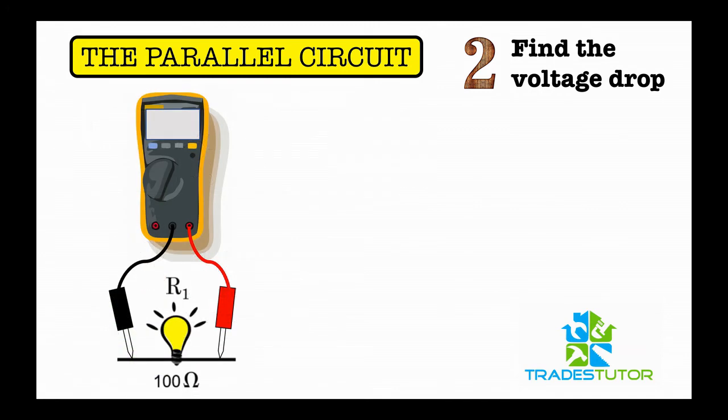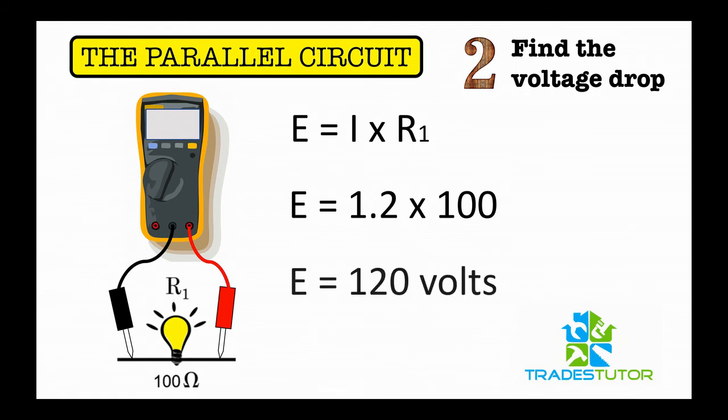All right, so we're going to find what's called the voltage drop. Got your multimeter again, we'll go back to Ohm's law. Okay, volts is equal to current times resistance, and this is resistor number one. Plug the numbers in—remember we found the current for this particular one was 1.2 amps—and there you go, it's 120 volts.